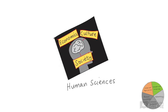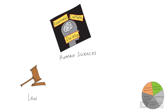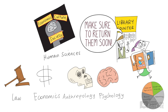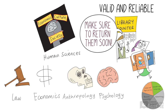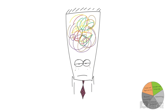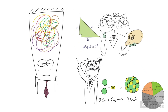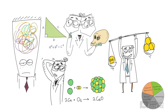Each individual subject area in the human sciences comes with its own key concepts and language. Key ideas in law will be different to key ideas in economics, anthropology or psychology. The human sciences often borrow language from mathematics and the natural sciences to ensure that the knowledge produced is valid and reliable. But people are complicated. Can we really use mathematical language to describe human societies, cultures and behaviour? It's very difficult, perhaps even impossible, to achieve complete neutrality — that is, zero bias — in the language of the human sciences.